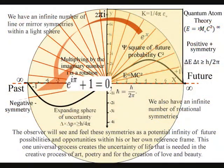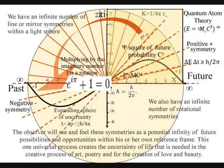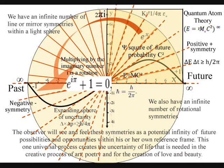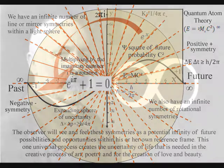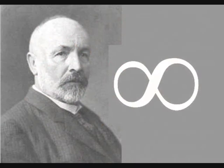This whole process can be seen as a process of spherical symmetry forming and breaking. There is an infinite number of line symmetries within a sphere, and also an infinite number of rotational symmetries. This is where the infinities come from that we find in mathematics, and this process also forms the potential infinity of possibilities and opportunities of everyday life.